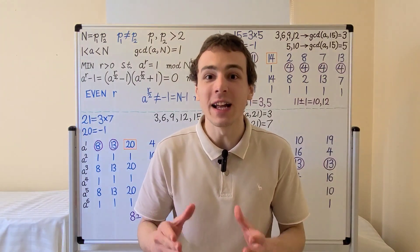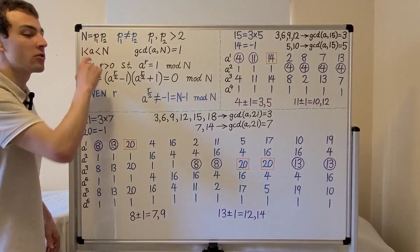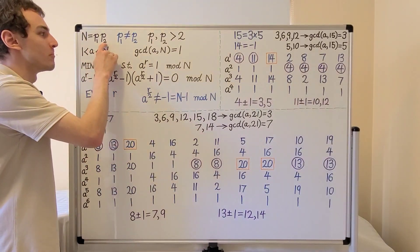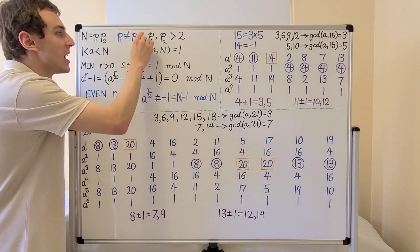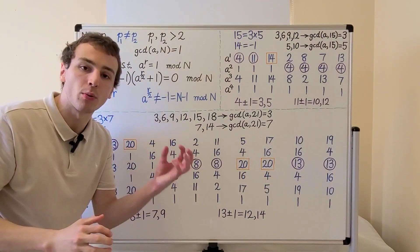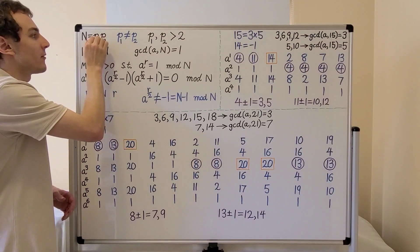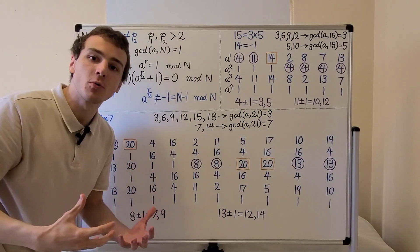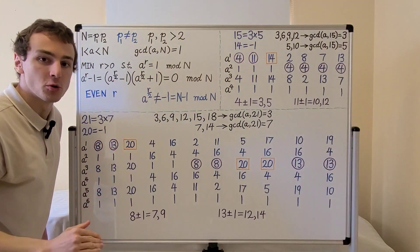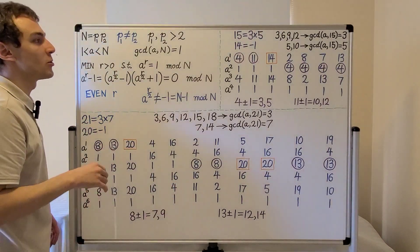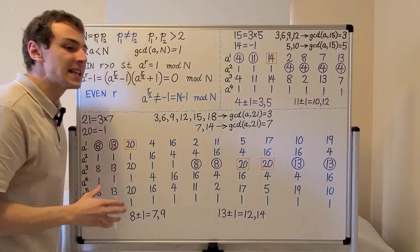Let's see some examples of Shor's factoring algorithm. We consider a semi-prime number n which is the product of two prime factors p1 and p2. We want these prime factors to be distinct, meaning p1 cannot equal p2. This prohibits n being a perfect prime square. Both p1 and p2 must be greater than two, so two does not appear in the prime factorization of n, meaning n has to be odd.